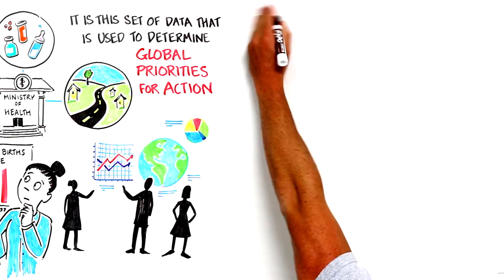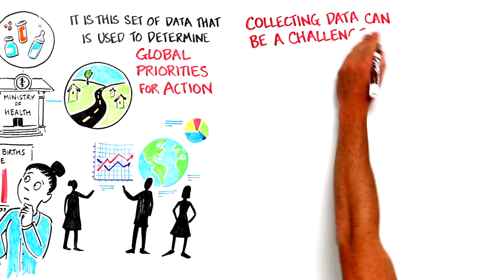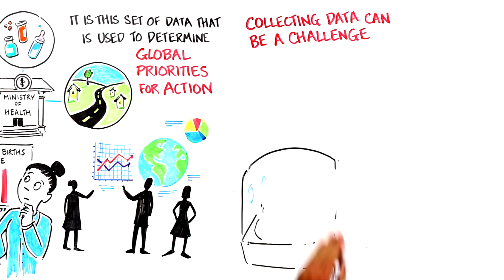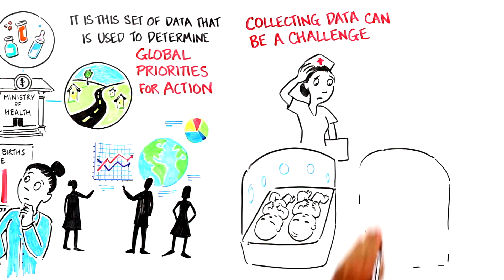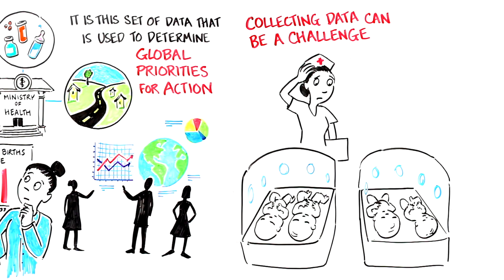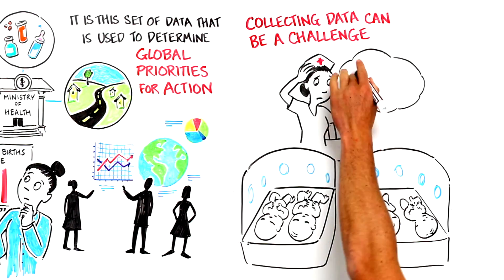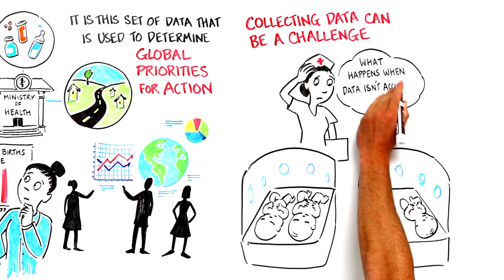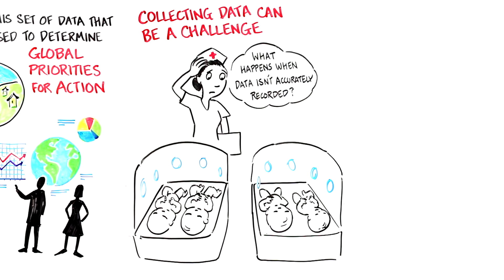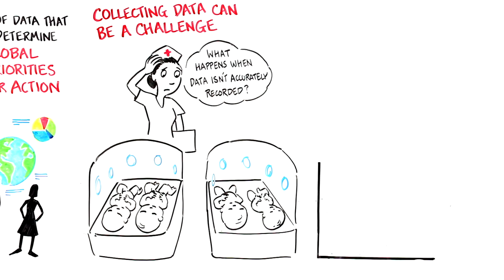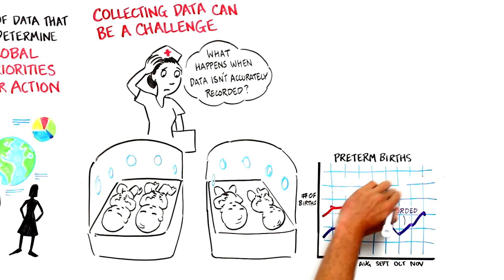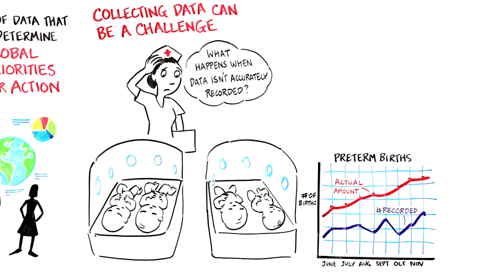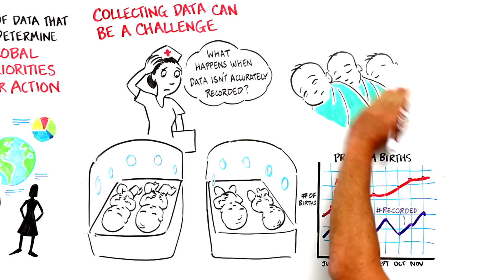The problem is that collecting all this data can be a challenge. Oftentimes, there are too many babies and not enough help. And isn't it more important to care for the preterm baby than to worry about data that goes into the chart? Well, what happens when the data isn't accurately recorded? The health administrator sees only 10 preterm births when there were 25.